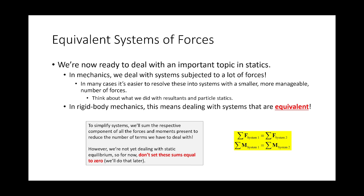So up until now we've dealt with particle statics, then moved into rigid body systems. In particle statics, we did two things: first, resultants — if a particle has a bunch of forces on it, we turn that into a single force. Second, we determined the forces required to keep that particle in equilibrium. The first idea is what's the resultant, and the second is what forces are required for equilibrium.